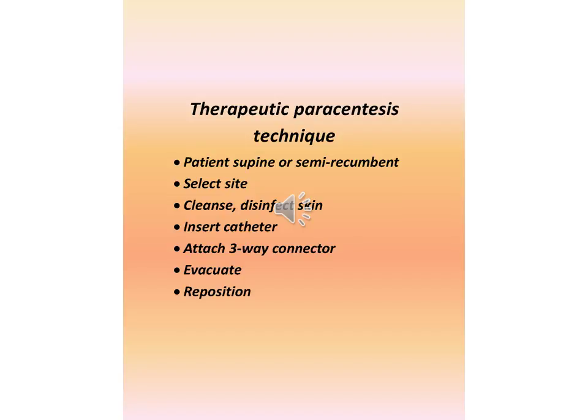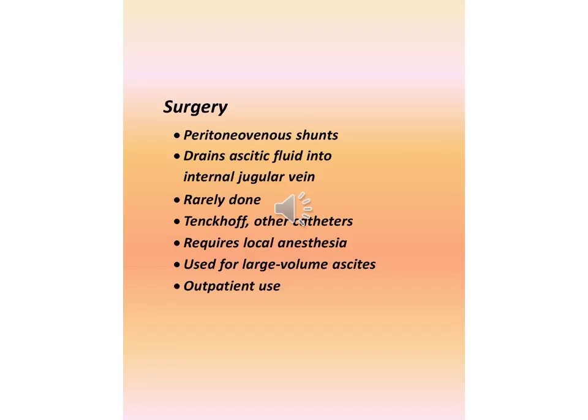Therapeutic paracentesis technique: patient supine or semi-recumbent, select site, cleanse and disinfect skin, insert catheter, attach 3-way connector, evacuate, and reposition. Surgery — peritoneovenous shunts drain ascitic fluid into the internal jugular vein; rarely done. Other catheters require local anesthesia and are used for large-volume ascites outpatient use.